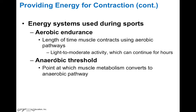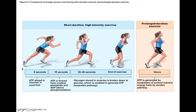The anaerobic threshold is the point at which muscle metabolism converts mostly to the anaerobic pathway. This varies depending on the type of activity and characteristics of your muscle cells. There is a sequential switch in ATP sources: the first six seconds use stored ATP; after about 10 seconds of high-intensity sprinting, ATP is formed from creatine phosphate through direct phosphorylation.